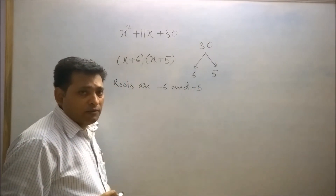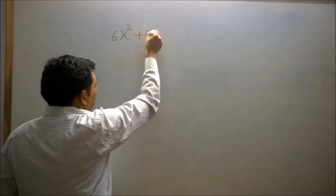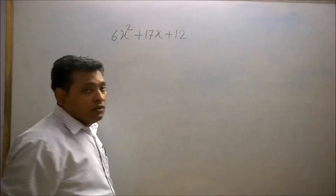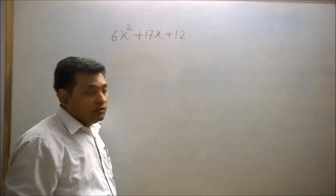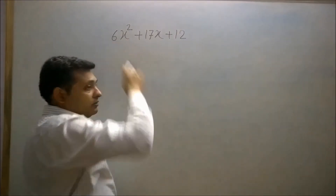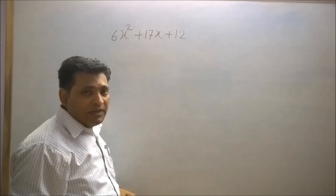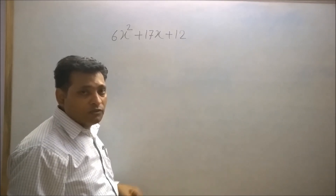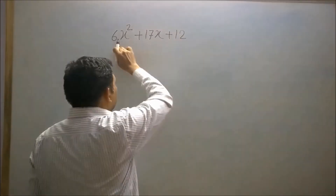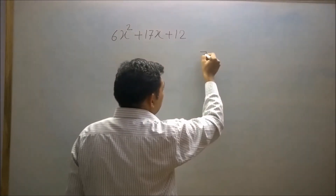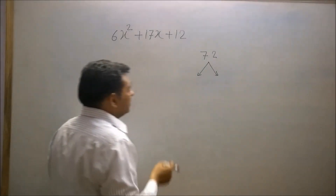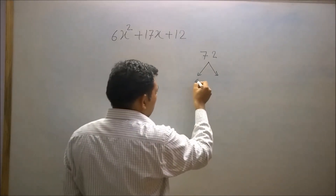Now take one more example: 6x² + 17x + 12. An important thing to note here is that the coefficient of x² is not 1, so the strategy to find the factors and roots is slightly different. Multiply 12 and 6 to get 72. Now factorize 72 into two numbers such that their sum will be 17: 9 × 8 = 72.